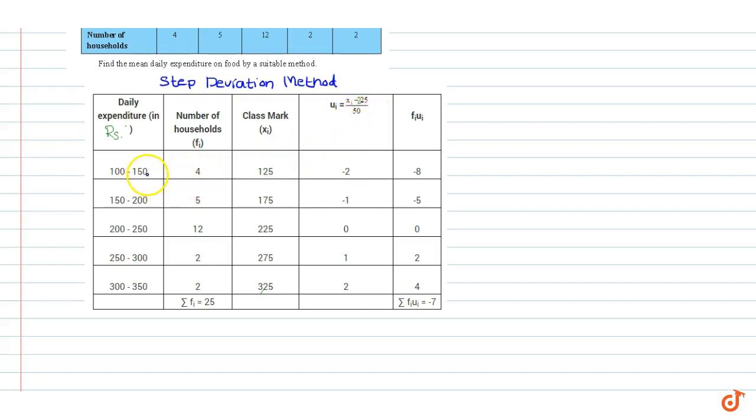In the first interval xi is equal to 125. So ui is equal to 125 minus 225 divided by 50 which is minus 2. In the second interval xi is equal to 175. So ui is equal to 175 minus 225 divided by 50 which is equal to minus 1 and so on.